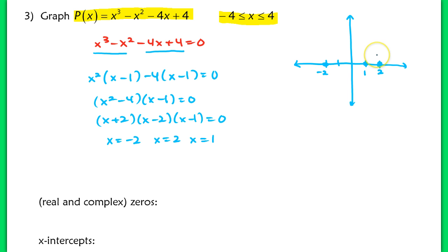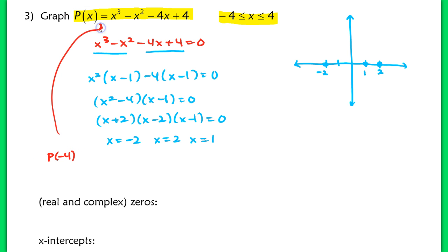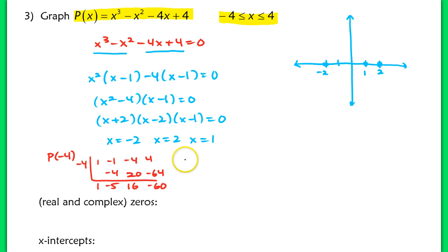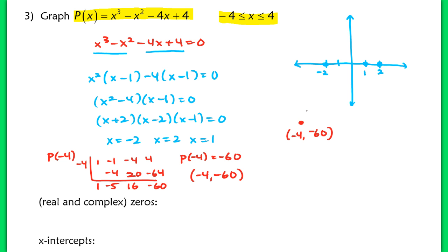We have three x-intercepts because these are all real roots: one at (negative 2, 0), one at (1, 0), and another at (2, 0). These represent all the different places where the function crosses the x-axis. Now, since we're graphing on the interval from negative 4 to 4, I'm going to use synthetic substitution to evaluate the function at x equals negative 4. From synthetic substitution, p of negative 4 equals negative 60, meaning the point (negative 4, negative 60) lies on the graph.